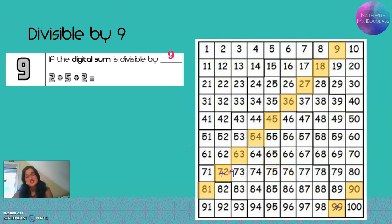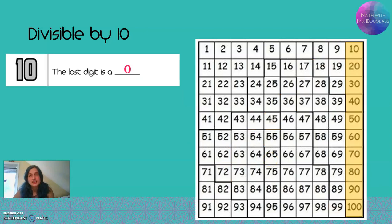And last but not least, probably honestly, in my opinion, the easiest one. It's divisible by ten if it ends in a zero because all the multiples of ten end in zero. Therefore, you can turn around and divide them by ten. And those are our divisibility rules.